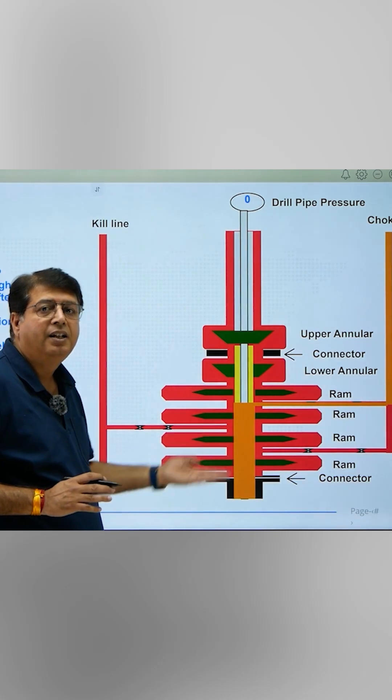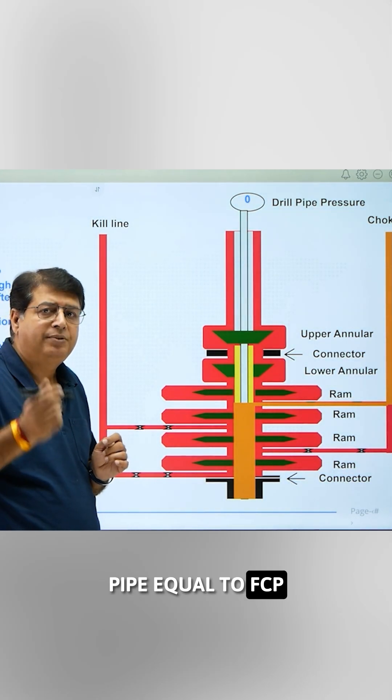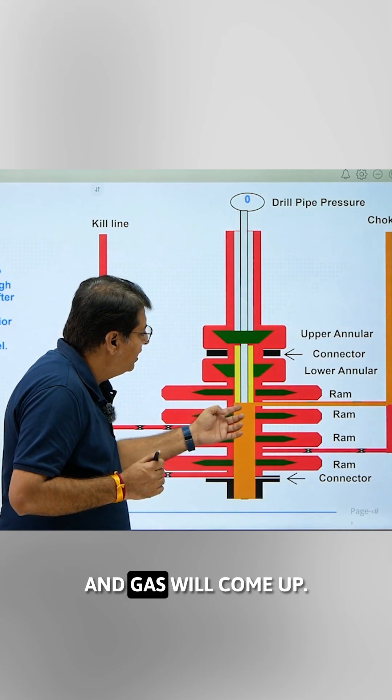And what will happen to gas? Gas will rise up the annulus. And when kill mud is at bit, I will hold a drill pipe equal to FCP, final circulating pressure.